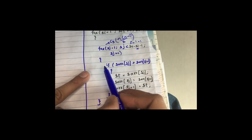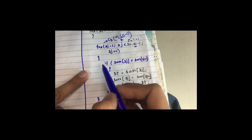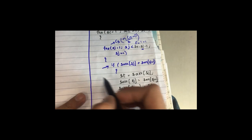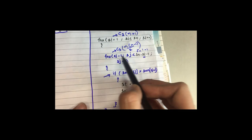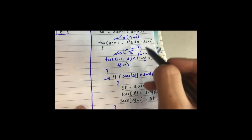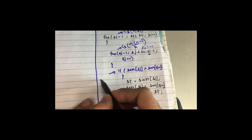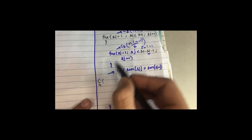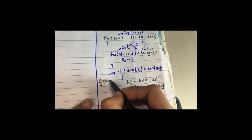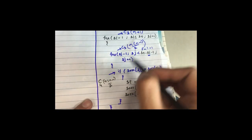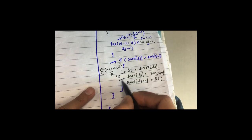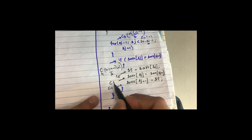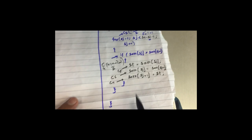Inside the inner loop there is the swapping code with an if condition. This if condition runs one time less than the outer loop iterations. Its time complexity is c4, equal to n(n−1)/2 minus 1. Similarly, c5, c6, and c7 for the swap operations have the same complexity as c4.